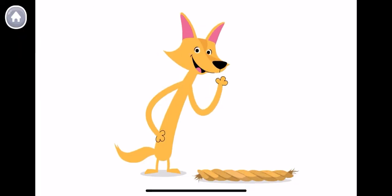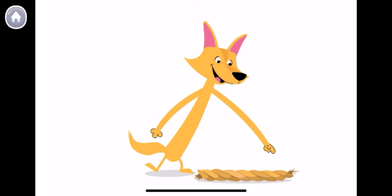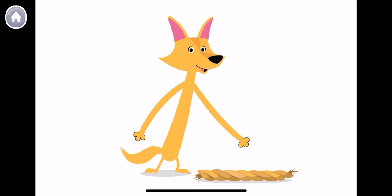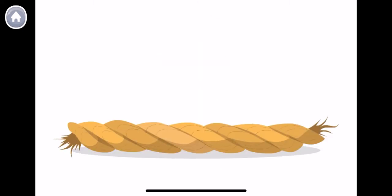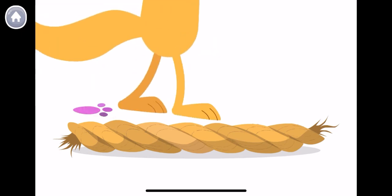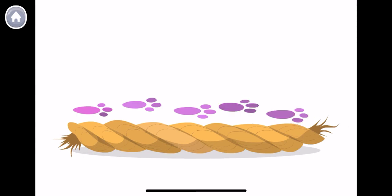How long is this rope from this end to this end? Let's use our paw prints to measure it. How many paw prints long is the rope? One, two, three, four, five! The rope is five paw prints long!